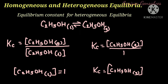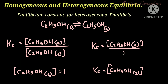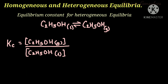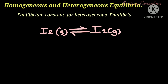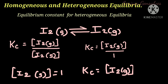The concentration of C₂H₅OH in the liquid phase is taken as 1. Hence KC equals the molar concentration of C₂H₅OH in gaseous phase. This is because at any given temperature, the density of a liquid remains constant independent of the amount taken, so the term in the denominator is constant. Similarly, for iodine in solid state reversibly producing iodine in gaseous state, KC equals the concentration of I₂ in gaseous state.